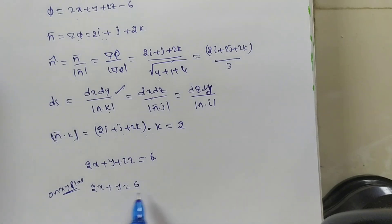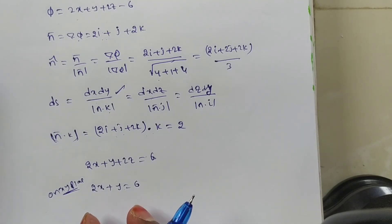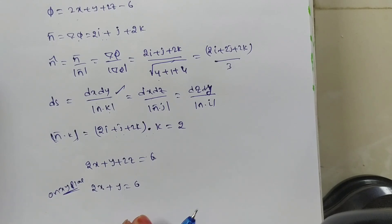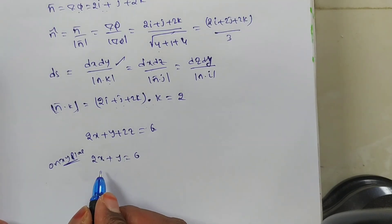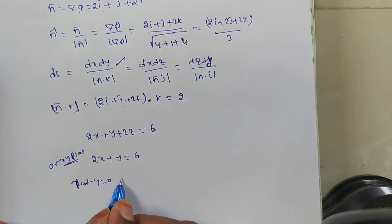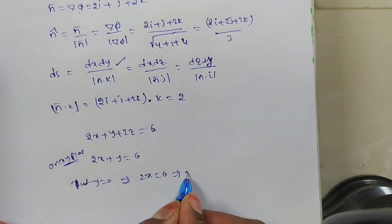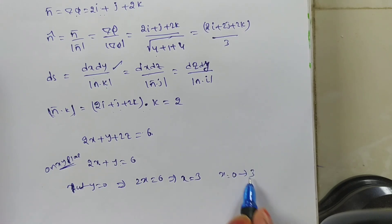2x + y = 6 is degree 1 in x and y, which is a straight line — a plane in two-dimensional space, not a square or rectangle. So we get dependent limits only. To get x limits, put y = 0: 2x = 6, so x = 3. Given the first octant, x goes from 0 to 3.